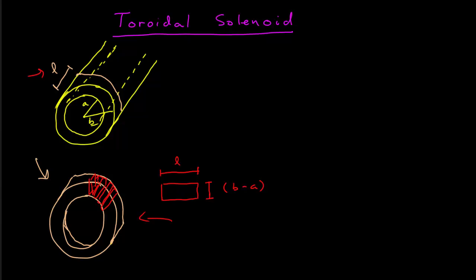This is in fact the geometry that a lot of actual inductors are made, so this is an important geometry to understand. Let's do an example: this toroid has an area of 4 centimeters squared, a current of 11 amps through the wires, and 1500 turns. Let's find the energy stored.